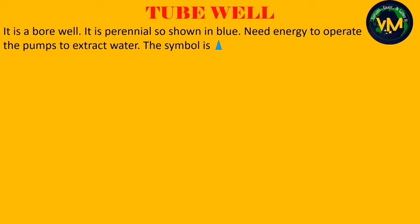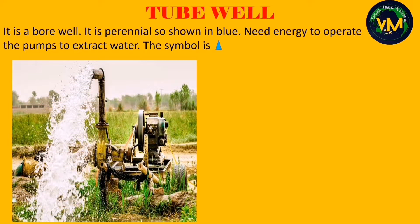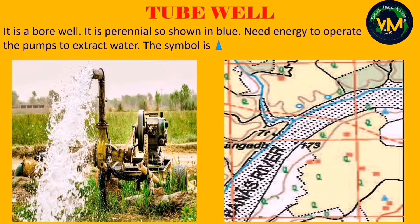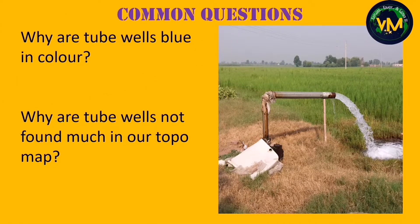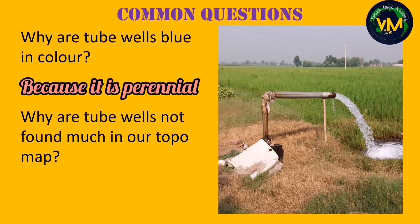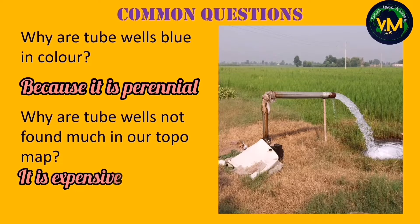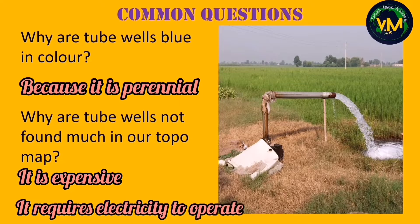Next is tube well. It is a bore well and it needs energy to operate the pumps to extract water. The symbol is a blue color triangle — it is blue because it is perennial. Tube wells are not found much in the topographical map because they are very expensive to construct, and they require electricity to extract water, which may not be available in all areas.